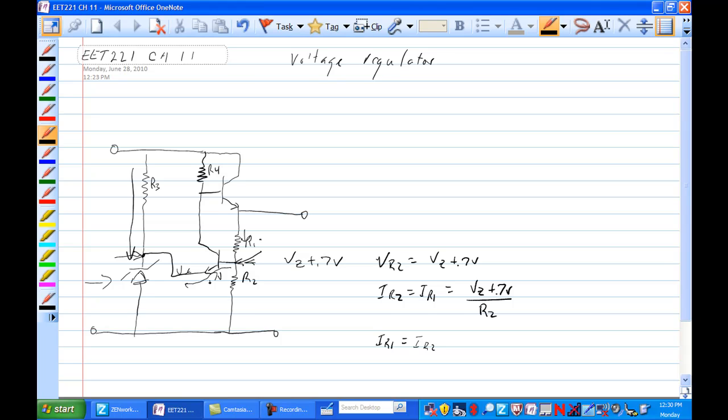The current through R1 is the same current as through R2. So if we find that current here, then we find current through R2 and the voltage V R2 is equal to I R1. Excuse me, V R1 is equal to I R1 or R2 times R1.